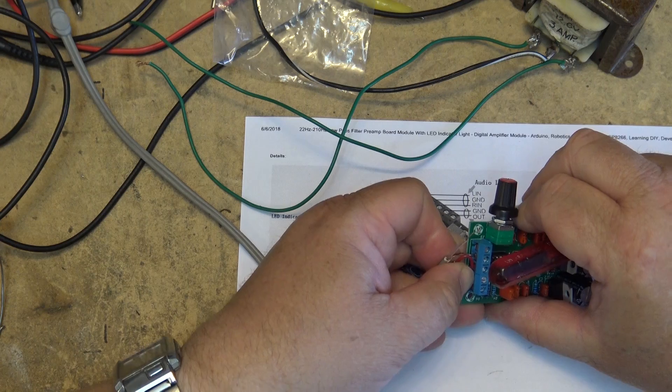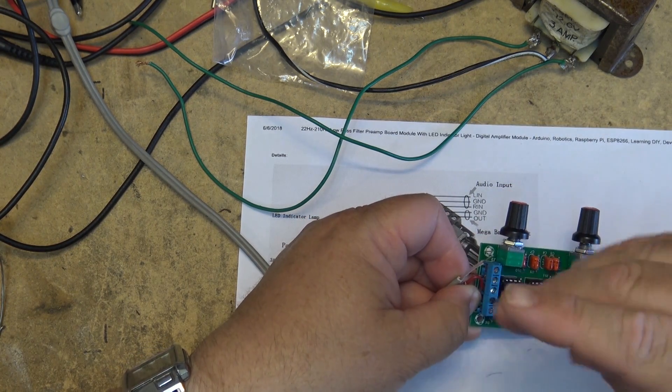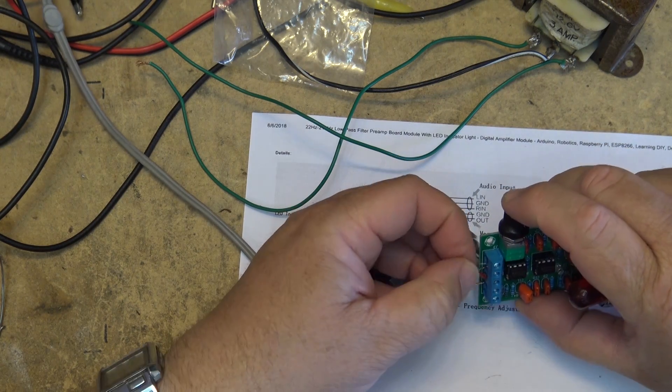But if you had a stereo source and you were going to use this to drive a separate subwoofer amplifier, you could place your left and right inputs into here and it would give you a mono output.